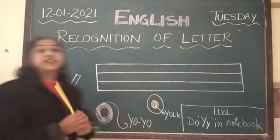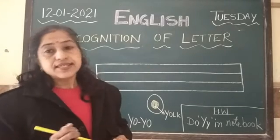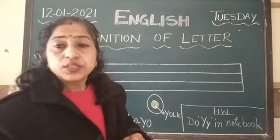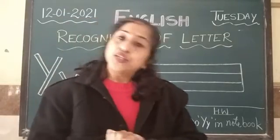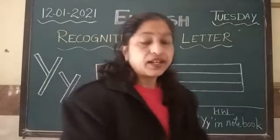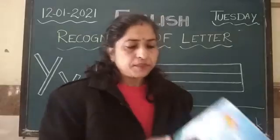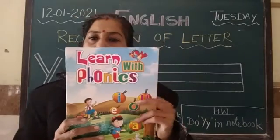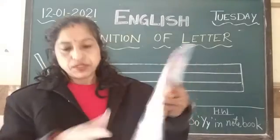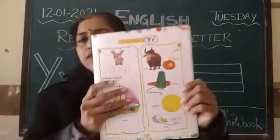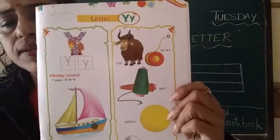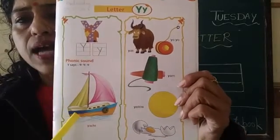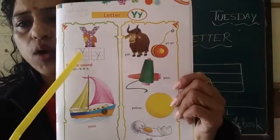We will see the difference between uppercase and lowercase Y, and how many lines are in English — four lines in English. We will see the pictures. This is our Learn With Monics book, page number 27, starting with letter Y.